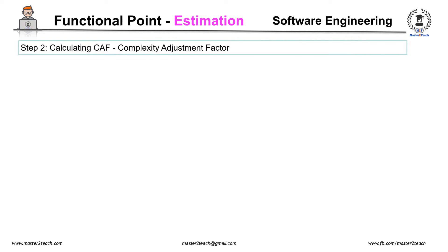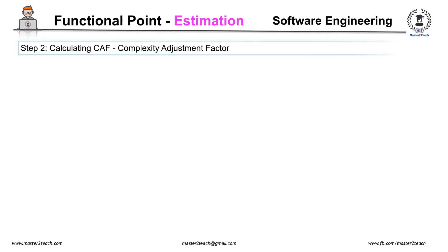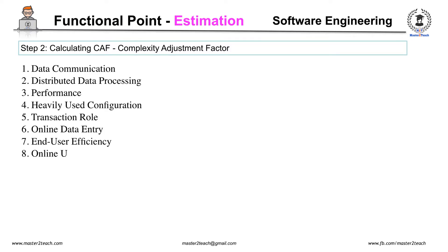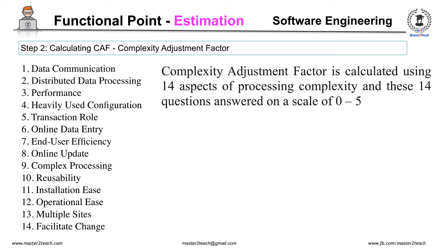Step 2: Calculating CAF Complexity Adjustment Factor. CAF is equal to 0.65 plus 0.01 times summation of Fi, where Fi is the value adjustment factor based on responses to 14 questions. Complexity adjustment factor is calculated using 14 aspects of processing complexity, and these 14 questions are answered on a scale of 0 to 5. 0 means no influence, 1 means incidental, 2 means moderate, 3 means average, 4 means significant, 5 means essential.